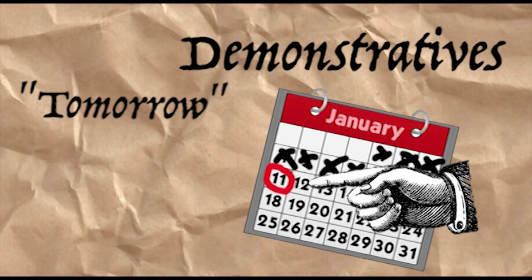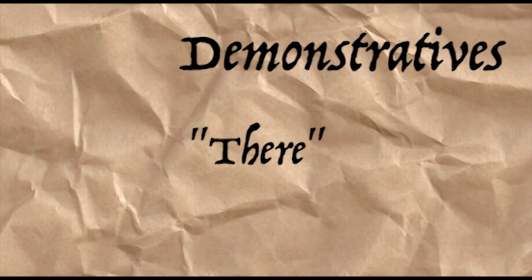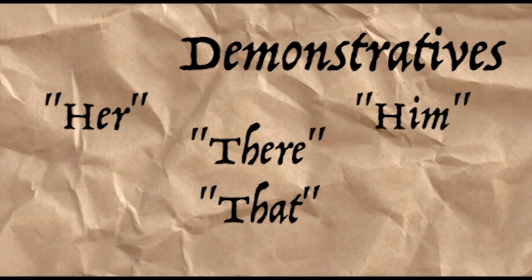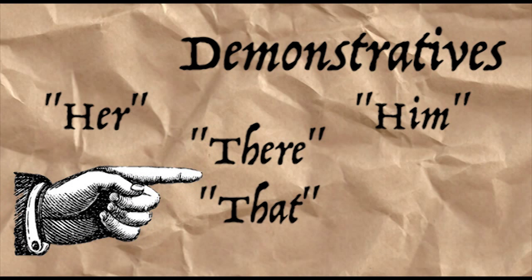Demonstratives behave similarly, though they're a little bit more flexible. Notice how the indexical 'tomorrow' always refers to the day after the day on which the speaker is speaking — it's an indexical. Now, notice how 'there' is like an indexical in that its reference can change depending on context, but it doesn't have any rules controlling what its reference is. In order to determine the reference of demonstrative words like there, her, him, and that, you need some kind of demonstration from the speaker, like pointing, rolling your eyes, nodding your head, or a special inflection in the way you say it.